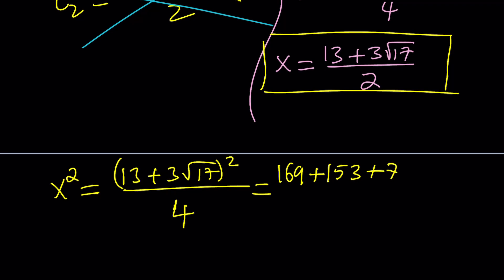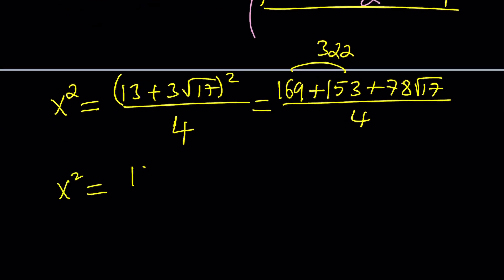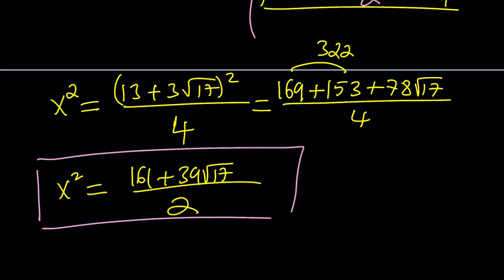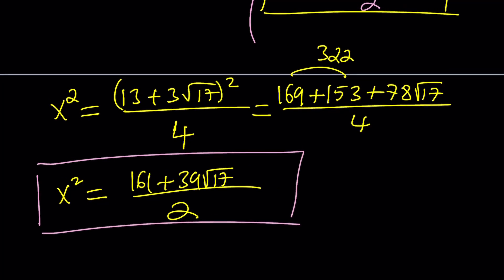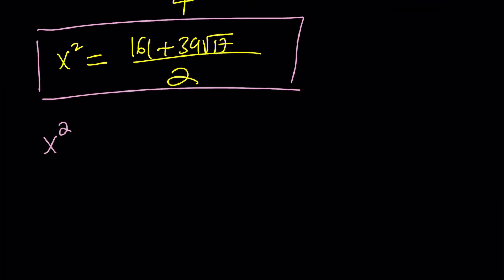So it's going to be 169 plus 9 times 17, which is 153, plus 13 times 3 times 2, which is 78 root 17 divided by 4. If you add these two, you're going to get 322. Half of that would be 161 plus half of 78 is 39. And then we're dividing everything by 2 again to get the simplest form. So this is x squared, and that was x.